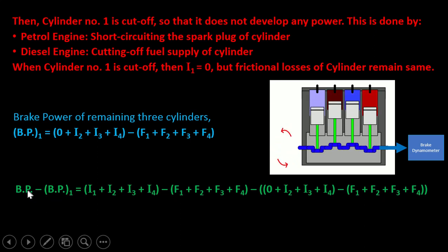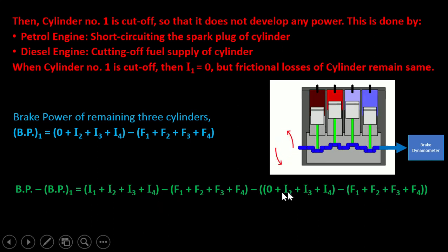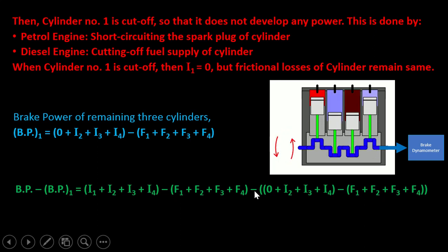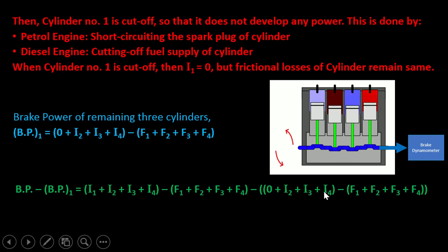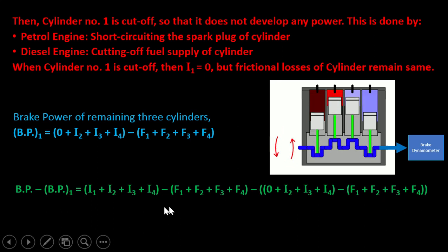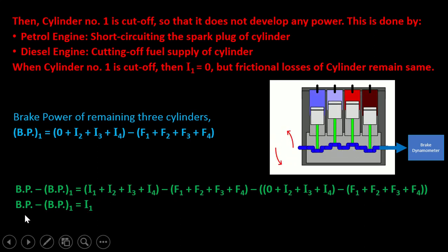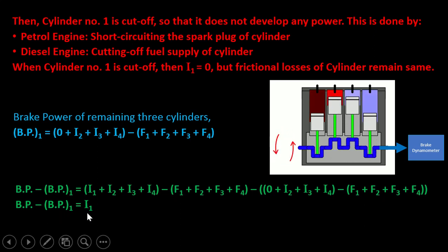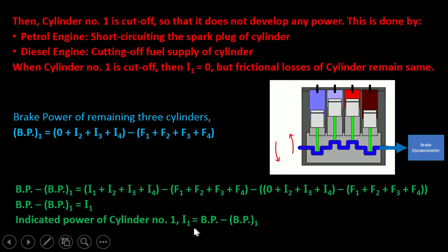Now we compute BP minus BP1. Using the formula of BP and subtracting the formula of BP1, after the subtraction all terms cancel except I1. So we get BP minus BP1 = I1. Therefore, the indicated power of cylinder number 1 is I1 = BP − BP1.